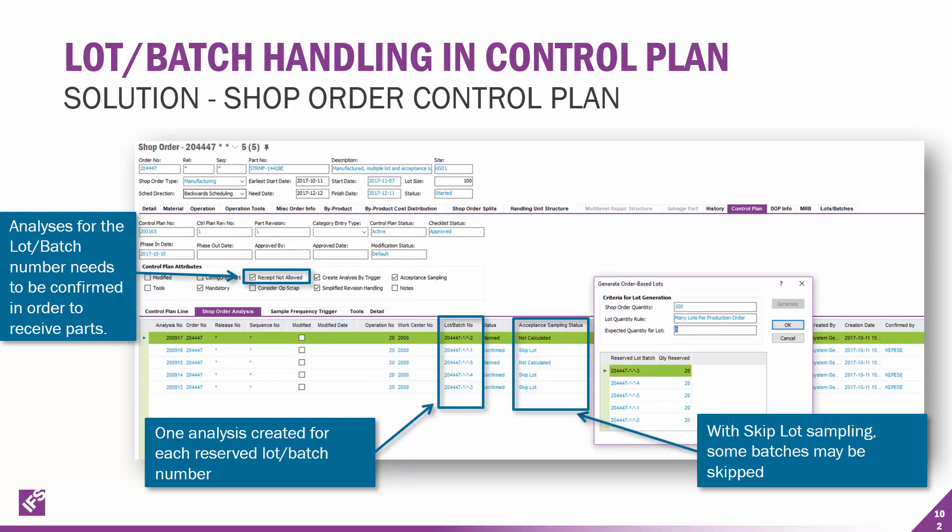What we've ended up doing is having an analysis by lot batch number. One analysis is created for each reserved lot batch number, and with skip lot sampling, some of those batches may be skipped.